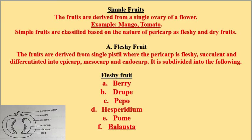Simple fruits are fruits derived from a single ovary of the flower — for example, mango and tomato. Simple fruits are classified into two types based on the nature of the pericarp: fleshy fruits and dry fruits. In this video, we are going to see about the fleshy fruit. Fleshy fruits are derived from a single pistil, that is from a single gynaecium and single ovary, where the pericarp is fleshy, succulent, and differentiated into three layers: epicarp, mesocarp, and endocarp.